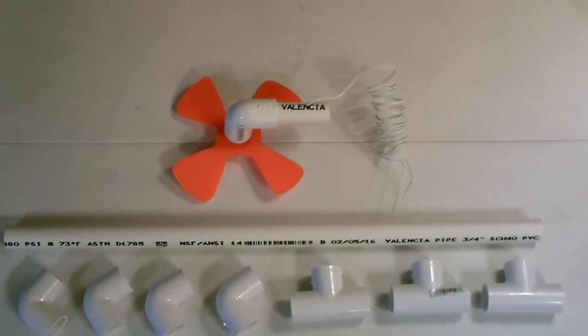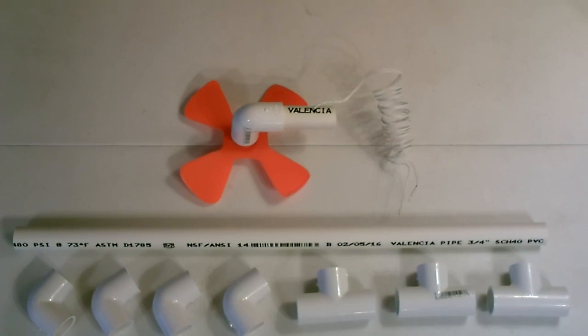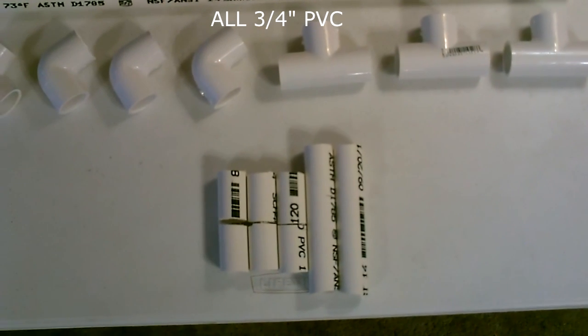Just the five corner sections, the three t-sections, one two-foot section of PVC. Then just cut down the two-foot section like that.